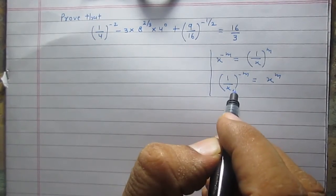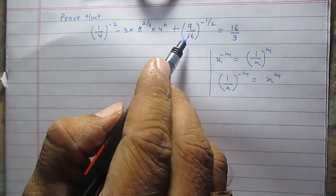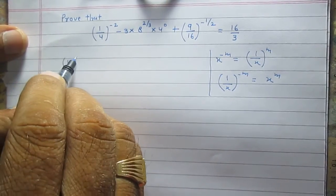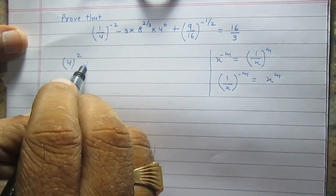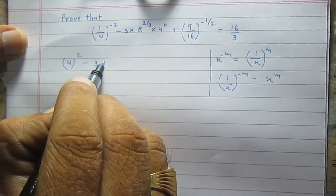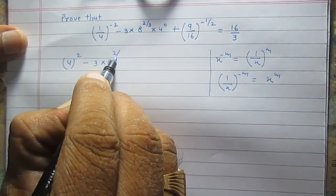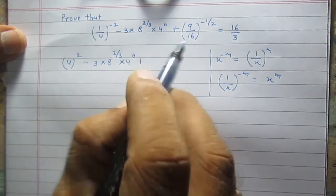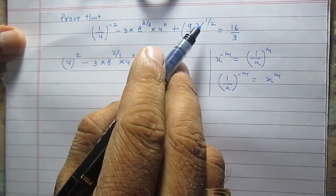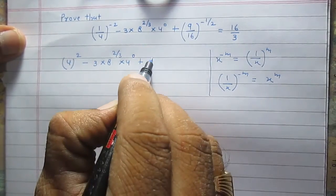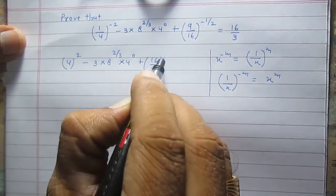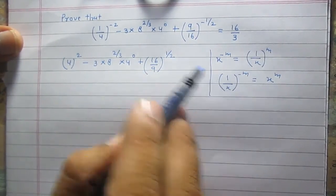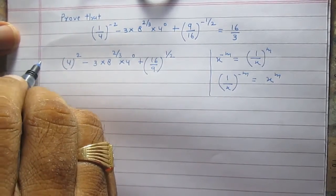Using this rule, we can rewrite the expression. The first part becomes 4 raised to the power 2, minus 3 multiplied by 8 raised to the power 2/3, multiplied by 4 raised to the power 0 as it is. Then (9/16) raised to the power minus 1/2 can be written as (16/9) raised to the power 1/2 using this rule. This is the left-hand side rewritten.